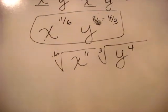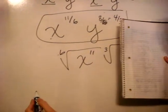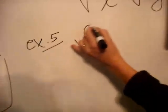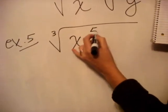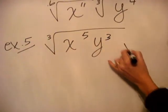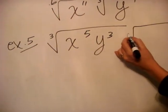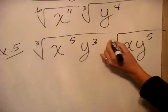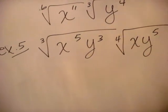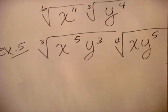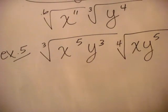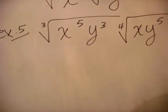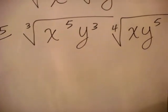We just have one more problem — example five. The cube root of x to the fifth, y to the third, times the fourth root of x, y to the fifth. You can stop the video right now and try this, then see if you get it right. I think the hardest thing with these problems is just finding the common denominators on the exponents.